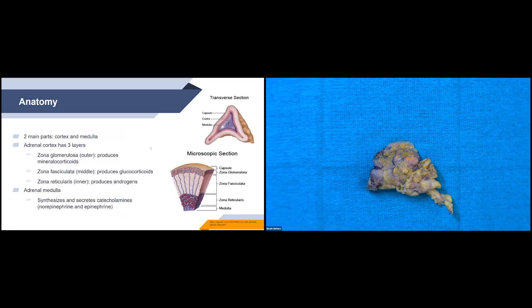The outside of the adrenal gland is the capsule. Then the next layer is the cortex, which is usually about two millimeters thick and typically a golden yellow color. The adrenal cortex has three layers: the zona glomerulosa, which is the outside layer and produces mineralocorticoids; then the zona fasciculata, which produces glucocorticoids; then the zona reticularis, which is the inner layer and produces androgens.